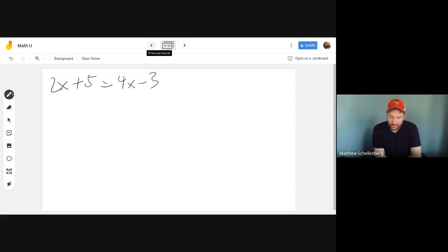Hey everybody, here's a quick video on combining like terms when you have variables on both sides of the equal sign. So in this example right here, we have 2x plus 5 equals 4x minus 3.